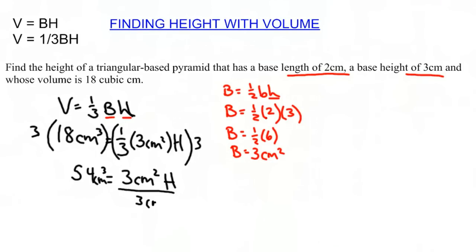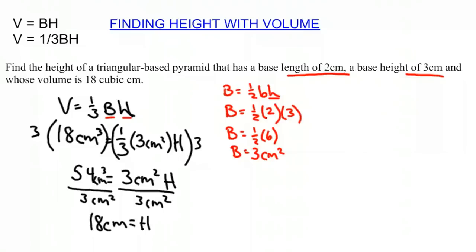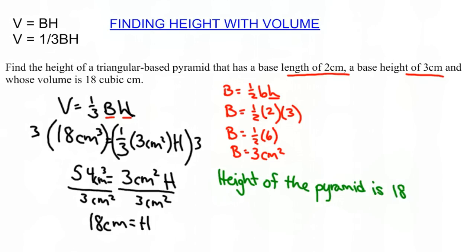That gives us 3 centimeters squared times height equals 18 times 3, which is 54 centimeters cubed. Then we divide both sides by 3 centimeters squared. 54 divided by 3 is 18, and centimeters cubed divided by centimeters squared is centimeters — so the height of the pyramid is 18 centimeters.